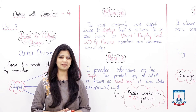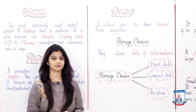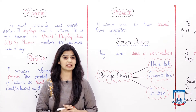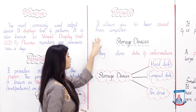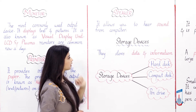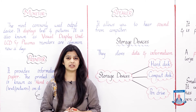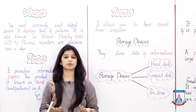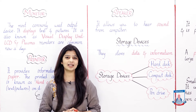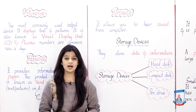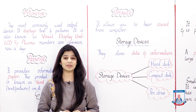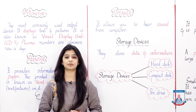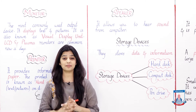Now let's see how speakers work. The next commonly used output device is the Speaker. The speaker allows you to hear sound from the computer. Have you seen speakers on your computer? We listen to audio, music, and cartoons through them. We listen to audio through speakers. This is the output device which gives us audio output — we call it the speaker.